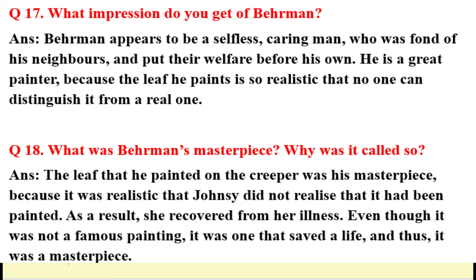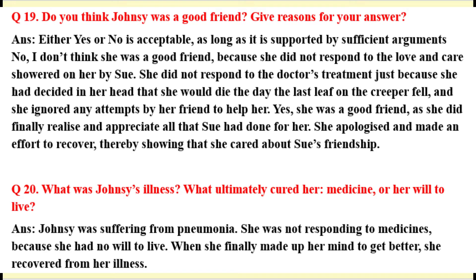Question 18: What was Behrman's masterpiece? Why was it called so? Answer: The last leaf he painted on the creeper was his masterpiece because it was so realistic that Johnsy did not realize it had been painted. As a result, she recovered from her illness. Even though it was not a famous painting, it was one that saved her life, and thus it was a masterpiece.